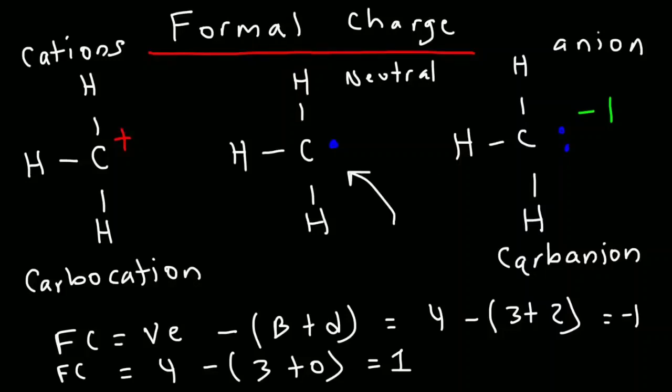Now, when you have an odd number of electrons, you have what is known as a radical. So a one-carbon radical is known as a methyl radical. Radicals tend to be neutral.